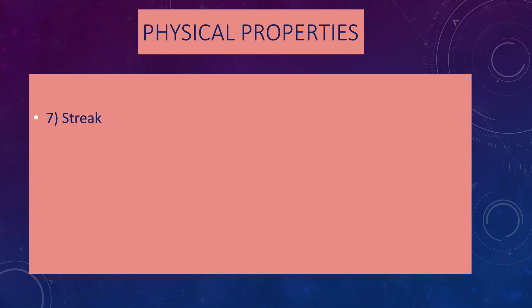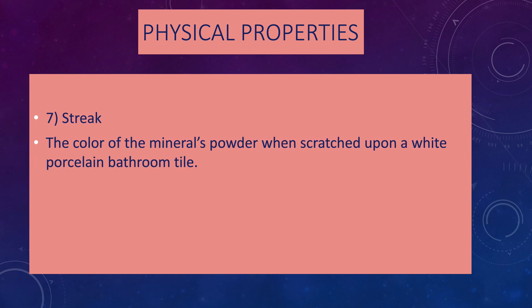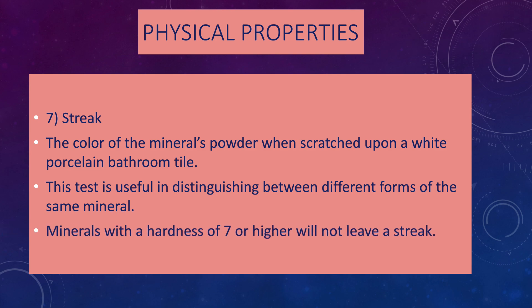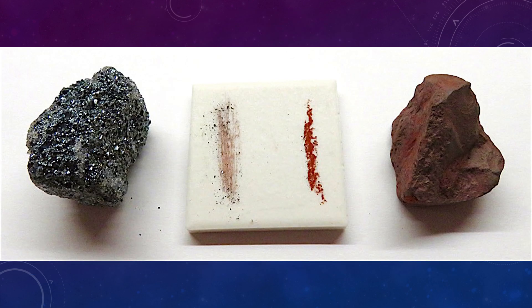Number seven is streak — the color of a mineral's powder when scratched upon a white porcelain bathroom tile. Streak is really helpful in the field for distinguishing between different forms of the same mineral. Minerals with a hardness of seven or higher will not leave a streak — they're so hard they'll scratch up the streak plate. This metallic mineral is silvery in color but leaves, interestingly, a brownish streak. The streak color does not always match the color of the mineral.